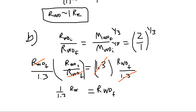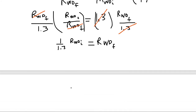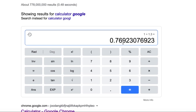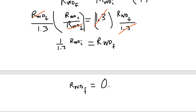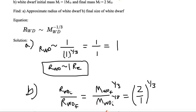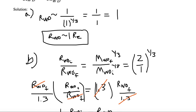So the final white dwarf is going to be smaller than the initial white dwarf. The radius of the white dwarf final equals 1 divided by 1.3. Going back to the calculator, 1 divided by 1.3 gives a value of 0.77, so it's 0.77 times the radius of the white dwarf initially. We know the initial white dwarf has one solar mass, and from part A we know its radius is approximately one Earth radius.